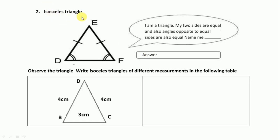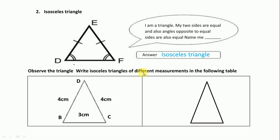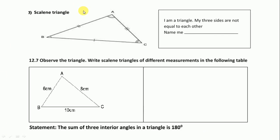Next, isosceles triangle. 'I am a triangle. My two sides are equal, and the angles opposite to the equal sides are also equal — name me.' Two sides are equal means it is an isosceles triangle. Write isosceles triangles of different measurements in the following table. Draw a triangle and show two sides are equal — here 5 cm and 5 cm — and one side is different. We label it as DEF.